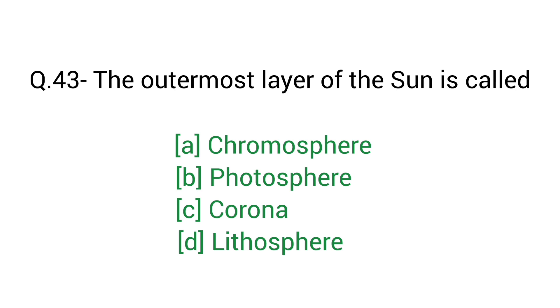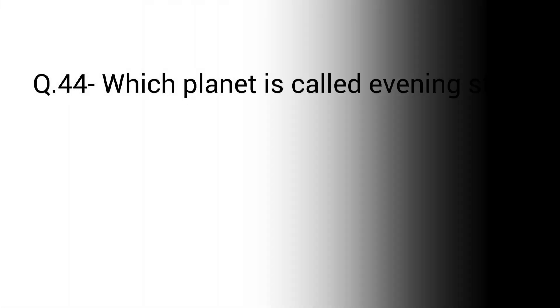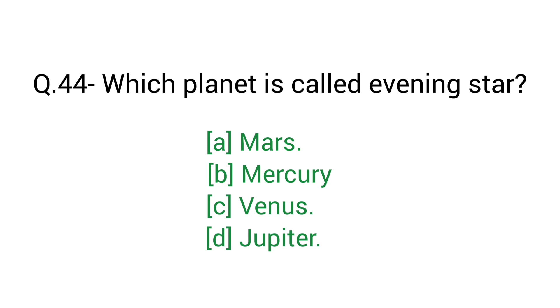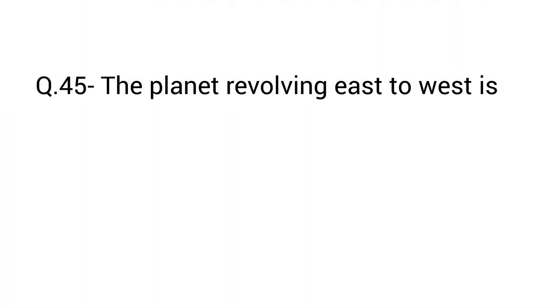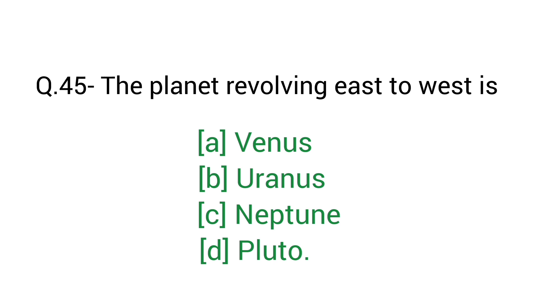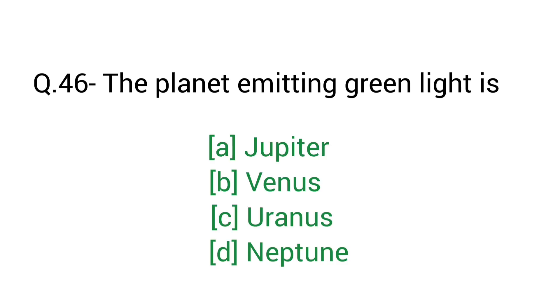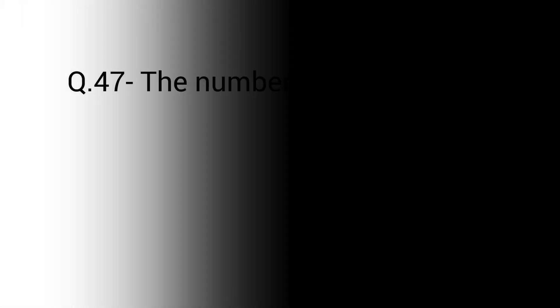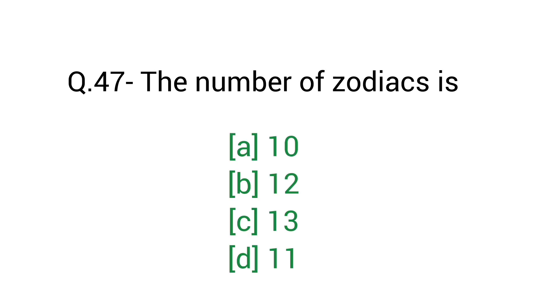Question number 43: The outermost layer of the sun is called? Right answer C — Corona. Question number 44: Which planet is called the evening star? Right answer C — Venus. Question number 45: The planet revolving east to west is? Right answer A — Venus. Question number 46: The planet emitting green light is? Right answer C — Uranus. Question number 47: The number of zodiacs is? Right answer — 12.